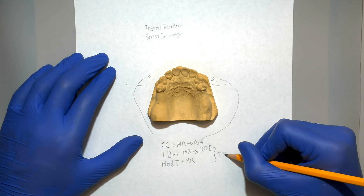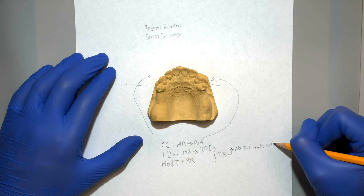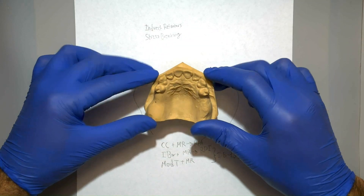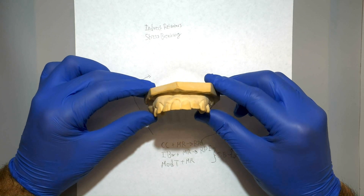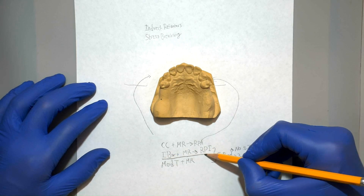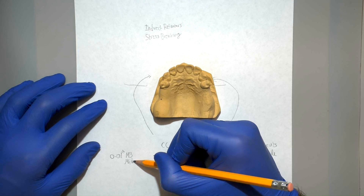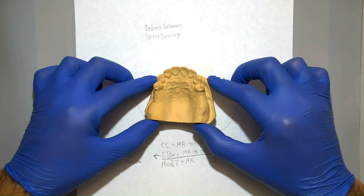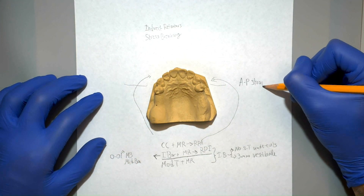Both the I-bar and the modified T-bar are infrabulge clasps, which means they won't be compatible with any soft tissue undercuts or buccal vestibular depth shallower than 3 mm. When evaluating this cast, we notice that there aren't any buccal soft tissue undercuts and there is sufficient buccal vestibular depth, so we'll most likely be going with an I-bar. For that, we'll be looking for a 0.01 inch undercut on the mesial buccal or the mid-buccal surface of the abutment teeth. Additionally, this cast seems to have good support, so we'll probably be using an AP strap for a major connector.